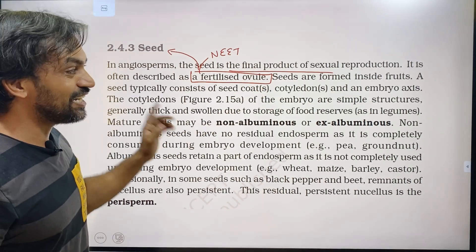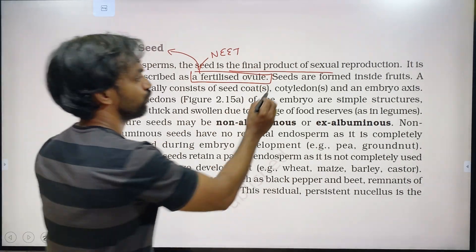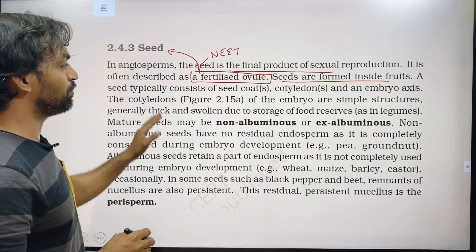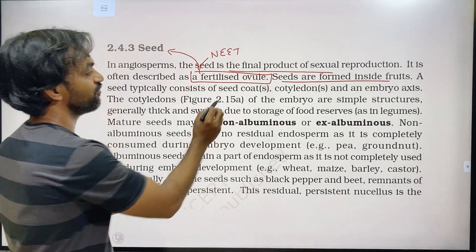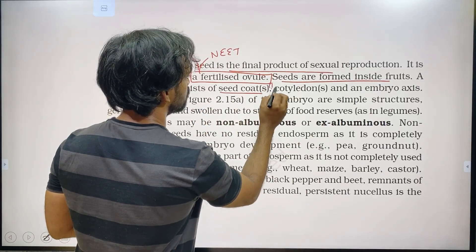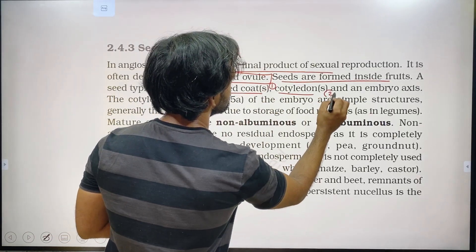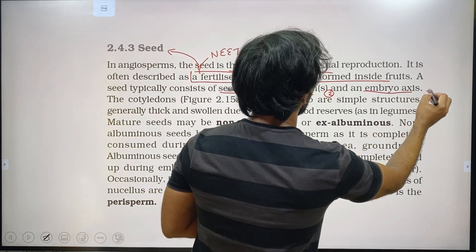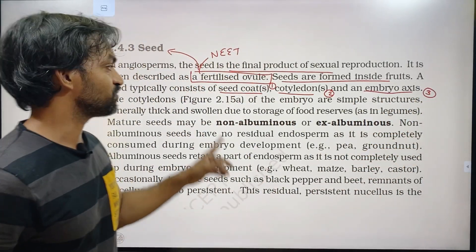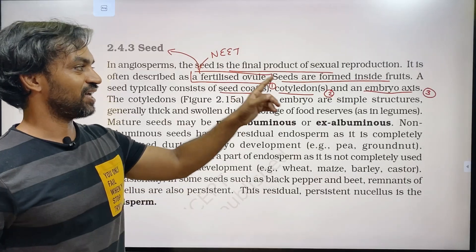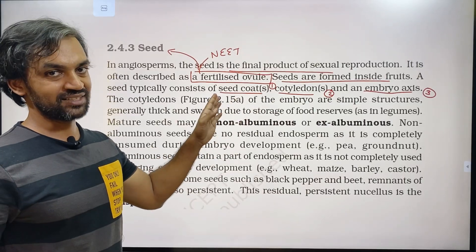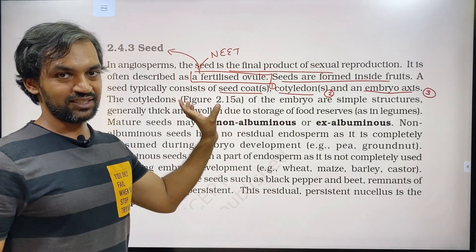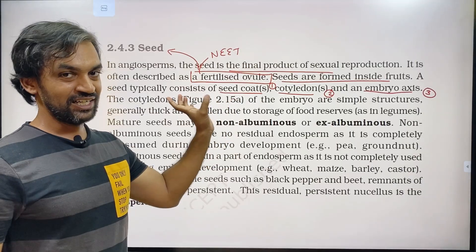Seeds are formed inside the fruits. The seed has a seed coat — testa and tegmen — as the main components of the seed coat. All seeds have these different seed coat layers.